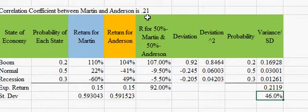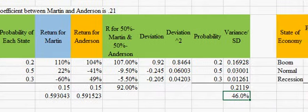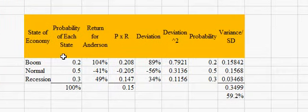So they are not highly correlated. The higher you get to one, the more highly correlated they are, and of course approaching zero there would be zero correlation. So we take a look at the returns for Anderson. Coming across here, we still have the same potential states of the economy, but these are the different returns you would have for Anderson.